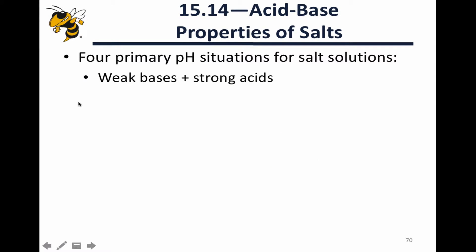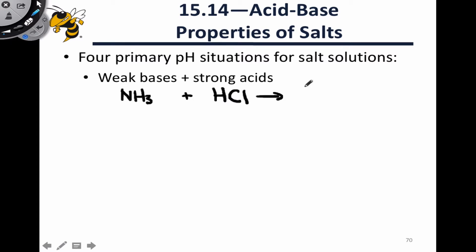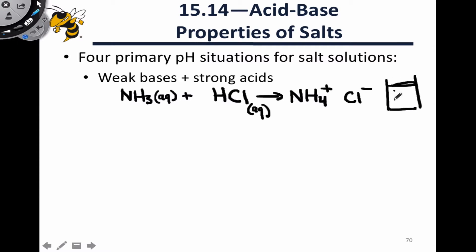We can also think about the reaction of weak bases with strong acids — a neutralization process that also produces a salt. Consider a weak base like NH3 reacting with a strong acid, HCl, to produce NH4+ and Cl-. This is an interesting case where water is not generated, but we've still made a salt, NH4+Cl-, which is an ionic compound. If we're talking about aqueous NH3 and aqueous HCl, there's water around, so we end up with a solution of NH4+ in water. We need to consider the acidity of the cation and the basicity of the anion.